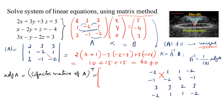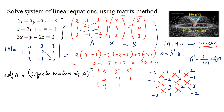Computing the cofactors: C₁₁ = (-2)(-2) - (1)(-1) = 4 + 1 = 5. C₁₂ = -[(1)(-2) - (1)(3)] = -[-2 - 3] = 5. C₁₃ = (1)(-1) - (-2)(3) = -1 + 6 = 5. C₂₁ = -[3(-2) - 3(-1)] = -[-6 + 3] = 3. C₂₂ = (2)(-2) - (3)(3) = -4 - 9 = -13. C₂₃ = -[(2)(-1) - (3)(3)] = -[-2 - 9] = 11. C₃₁ = (3)(1) - (3)(-2) = 3 + 6 = 9. C₃₂ = -[(2)(1) - (3)(1)] = 1. C₃₃ = (2)(-2) - (3)(1) = -4 - 3 = -7.